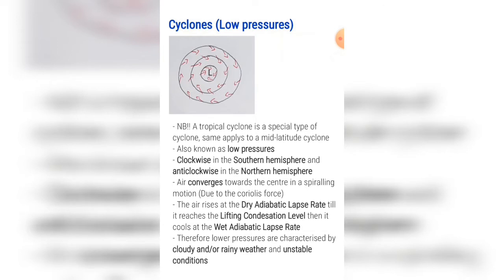I've already done a video about tropical cyclones and later on I will do a video about mid-latitude cyclones. Cyclones are low pressures and in the southern hemisphere they rotate clockwise, and in the northern hemisphere they rotate anti-clockwise. Air converges towards the centre in a spiralling motion — this is due to the Coriolis force.